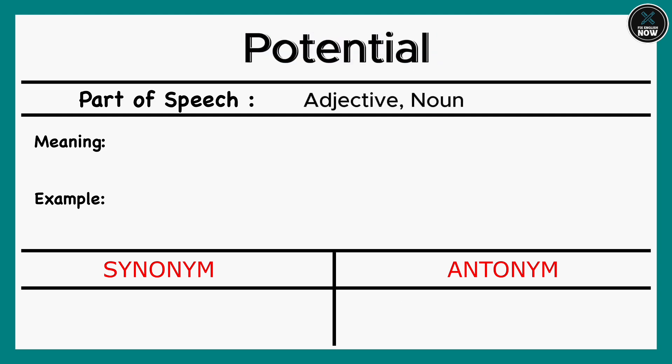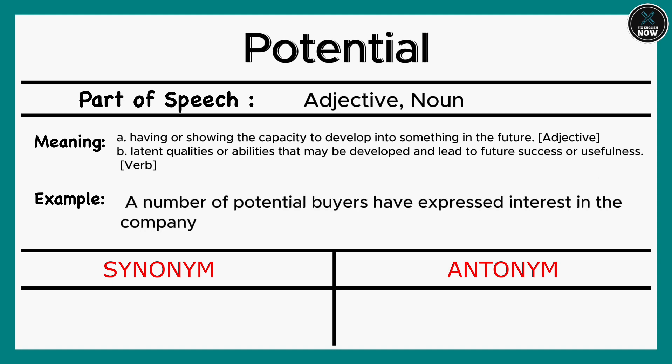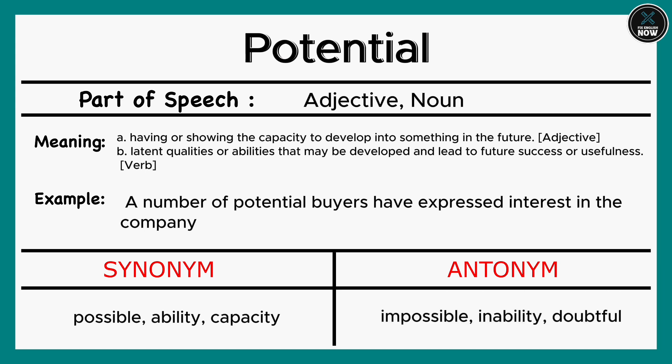Potential: A. Having or showing the capacity to develop into something in the future (Adjective). B. Latent qualities or abilities that may be developed and lead to future success or usefulness (Noun). Example: A number of potential buyers have expressed interest in the company. Synonyms: Possible, Ability, Capacity. Antonyms: Impossible, Inability, Doubtful.